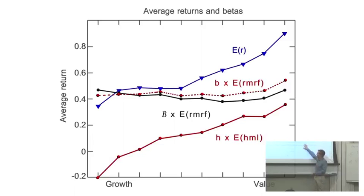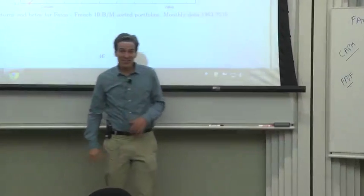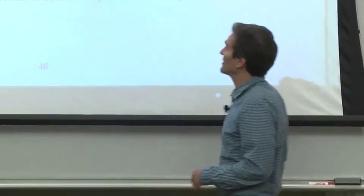The value stocks are things like airlines, steel mills, railroads, things with a lot of book assets and not much stock market value. The growth stocks are things like Google, huge stock market value, practically no assets to look around and see.